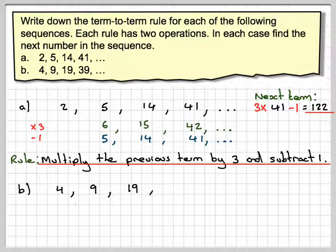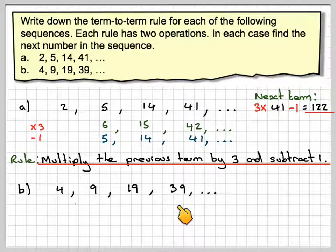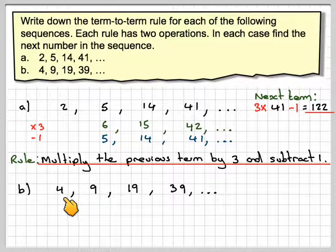So B, I've got 4, 9, 19, 39. So let's do 4 times 2. That will give me 8, and if I add 1 to 8, I get 9. That looks okay.